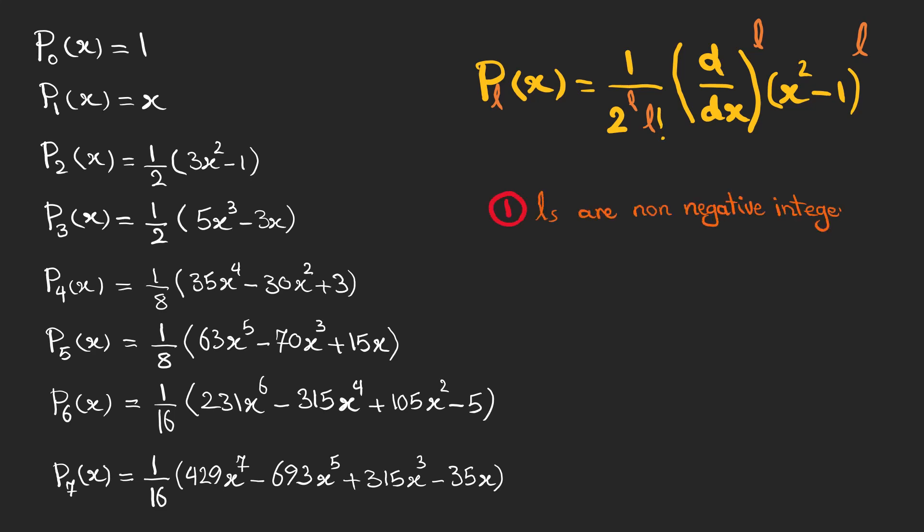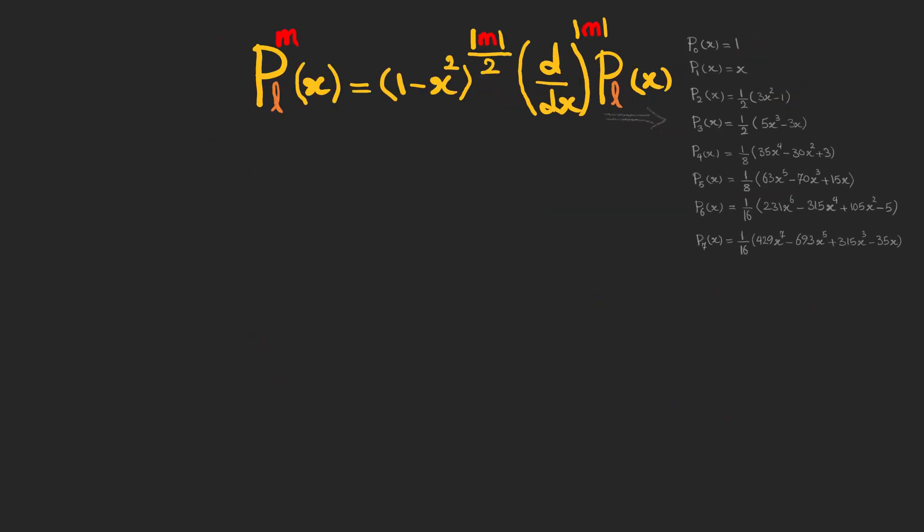The first thing is Ls are non-negative integers as you can see from the Rodrigues formula. Second, L determines the degree of each polynomial. And finally, these polynomials are either even or odd based on the parity of L.